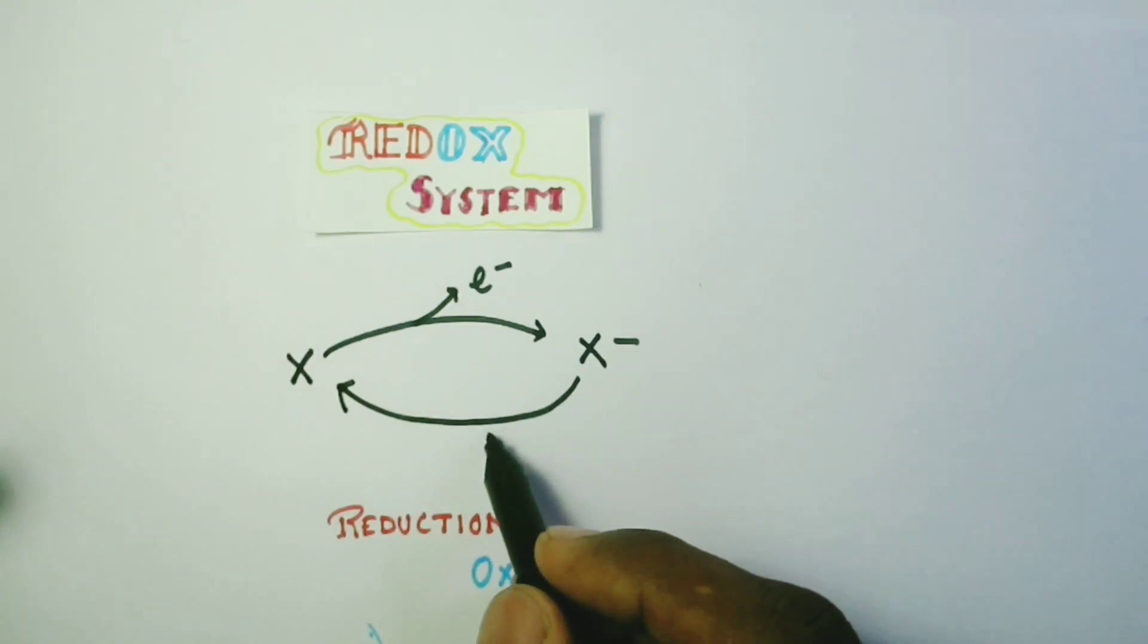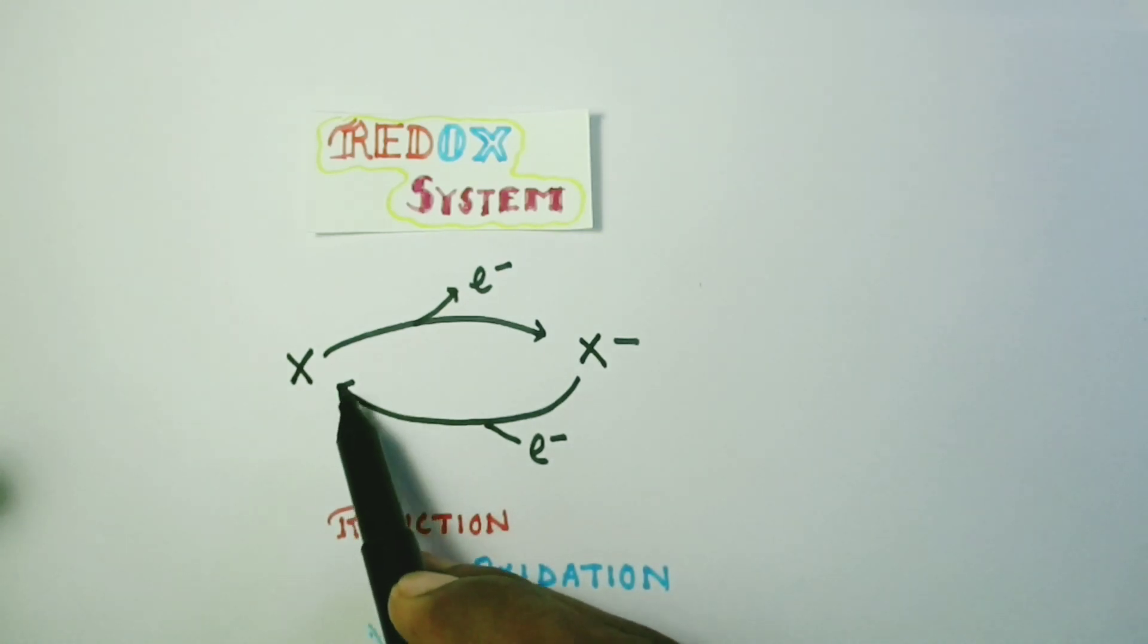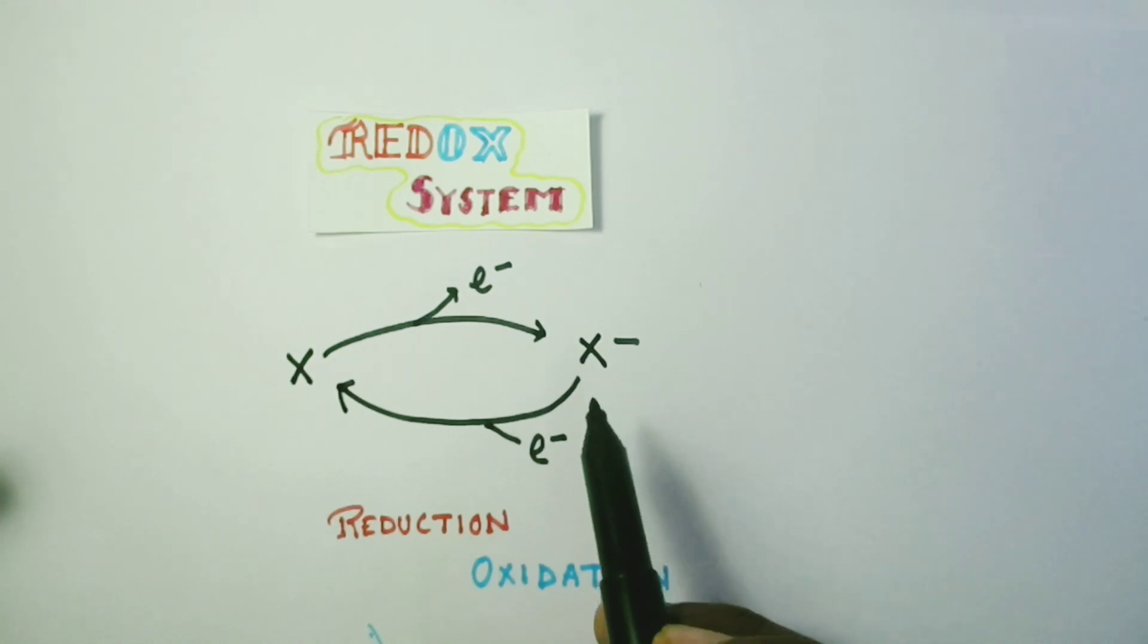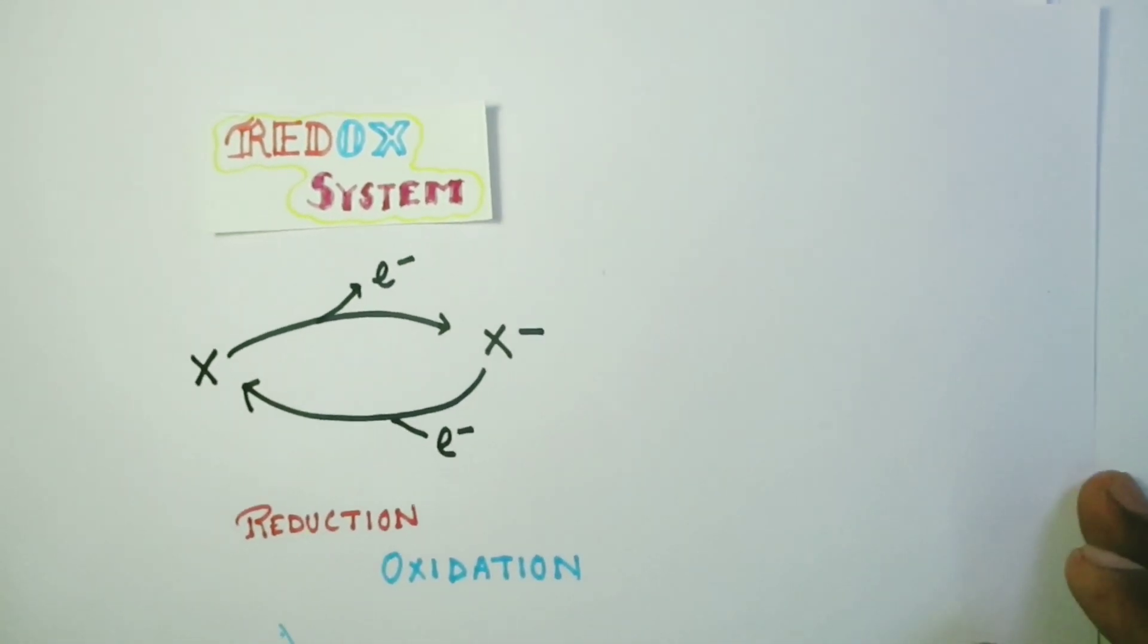In a redox system, this happens continuously. Oxidation and reduction. X to X minus and X minus to X. Now that we have understood what redox system really is, we can see it as an example.